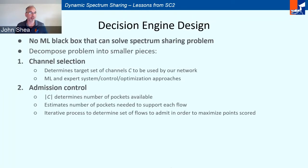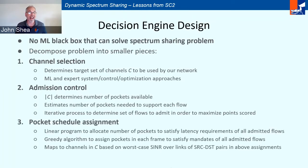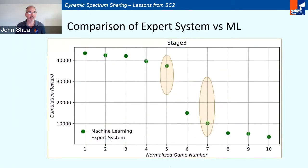One of the first things we realized is that the decision engine couldn't be solved by just some black box solution — the state space and action space are just too large to train. So we applied the typical engineering approach of decomposing the problem into smaller pieces: channel selection (which channels are we going to use?), admission control (which flows are we going to support?), and pocket schedule assignment (how are we going to put those individual flows into an achievable schedule based on our constraints on the number of simultaneous transmit and receive streams at each radio?).